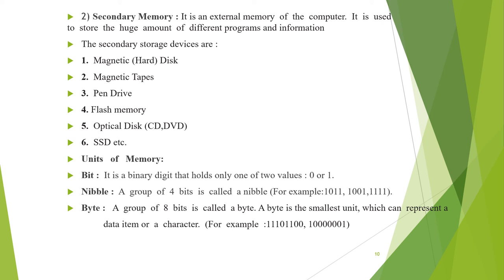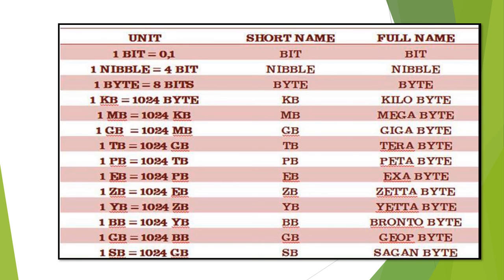Now, very important: units of memory. Like other units, memory has its own unit called a byte. A bit is a binary digit which holds one of two values — either 0 or 1. A nibble is a group of four bits. A byte is a group of eight bits — the smallest unit that can represent a data item or a character. One kilobyte equals 1024 bytes, one megabyte equals 1024 kilobytes.